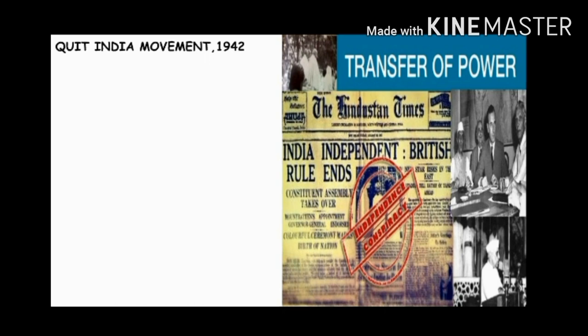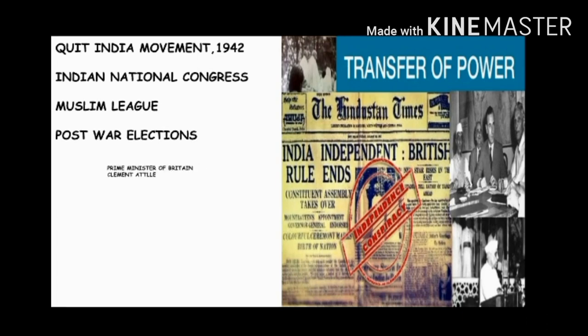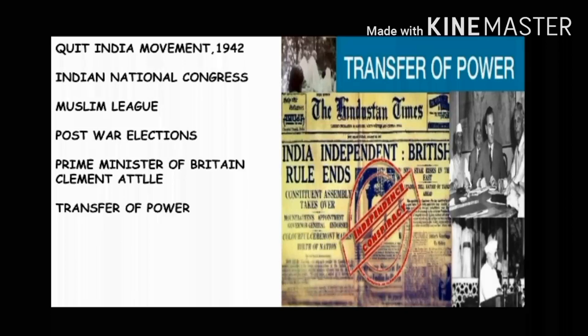The Second World War broke the economy of Britain. The Congress won all the general seats in the post-war elections to the legislature and the Muslim League won the seats reserved for Muslims. Looking at the situation, Clement Attlee, the Prime Minister of Britain, decided to transfer power to the Indians as soon as he could.